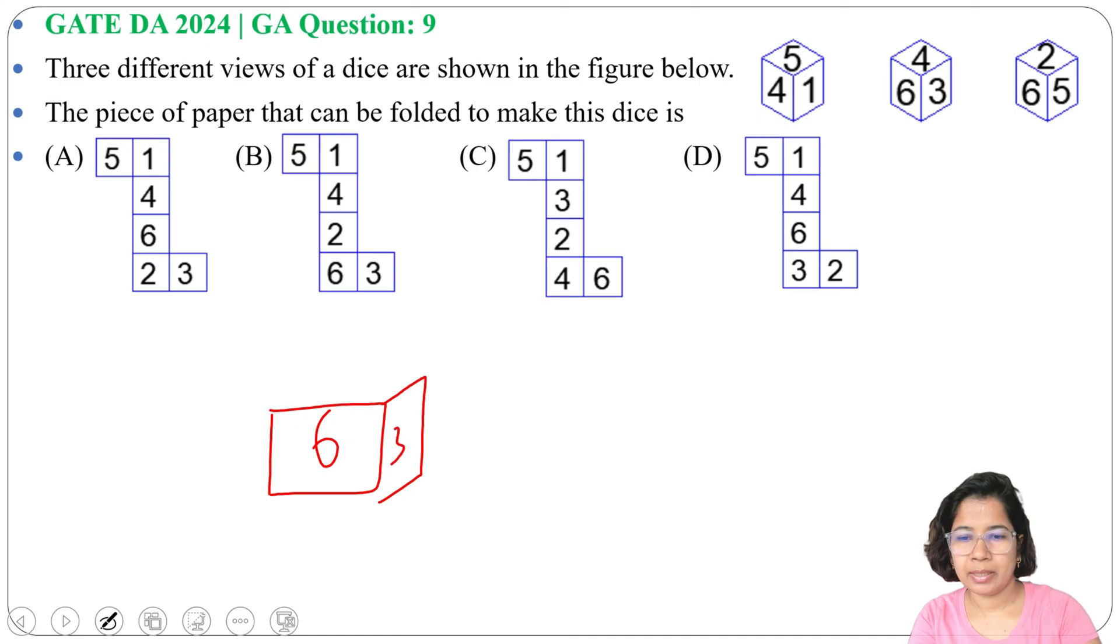Then this side will be 3. Upper side will be 4. We are folding like this. And this below side will be 2.